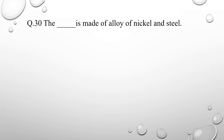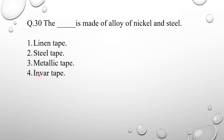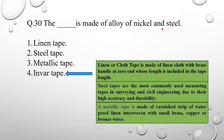Question number 30: blank is made of an alloy of nickel and steel. Among the options, the invar tape is made up of an alloy of nickel and steel, so option number 4 is correct. You can go through the extra data provided on linen tape, steel tape, and metallic tape for more information.